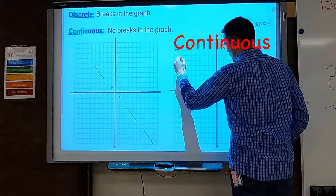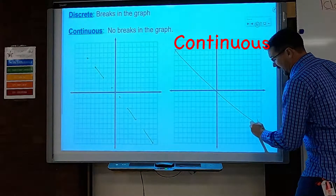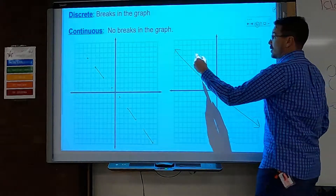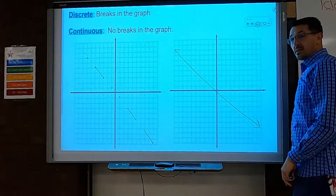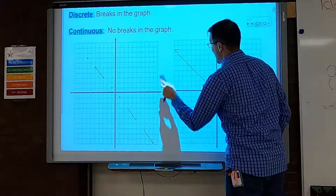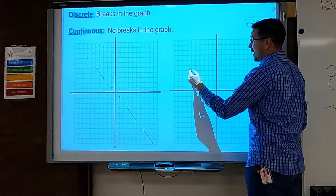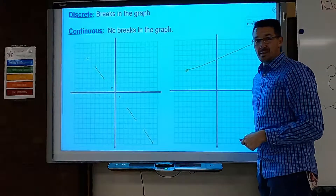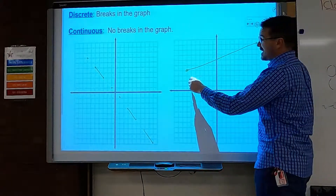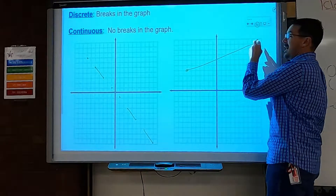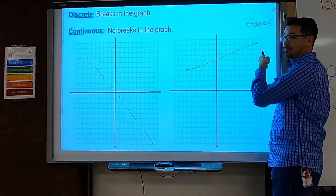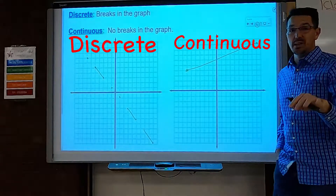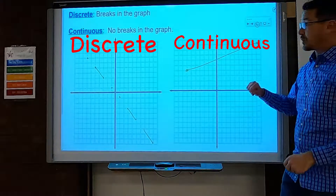Continuous usually means you have a line. You graphed linear equations last year — that's a continuous graph, a graph that goes on forever in both directions. You can also have a start and a stop, and it's still considered continuous between those two points because there are no breaks. We'll get into more detail when we talk about how to write that in interval notation.